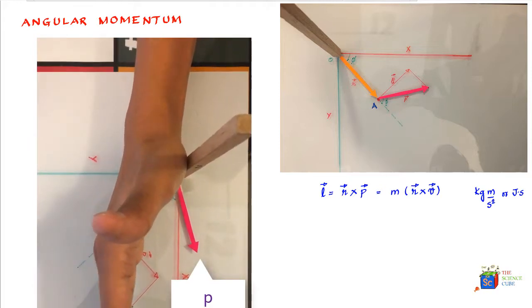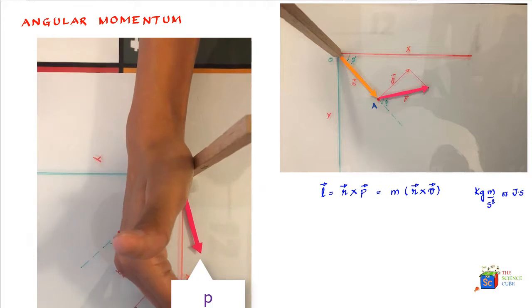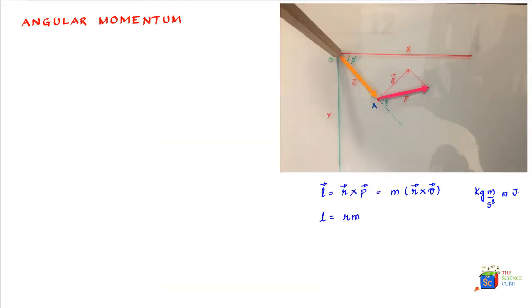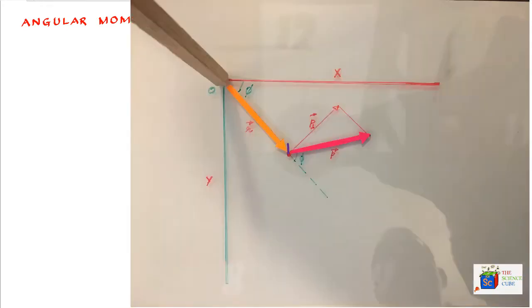This is the way the hand should be. Then the direction of the thumb gives the direction of the angular momentum L. So the magnitude of L can be written as R M V sin phi,